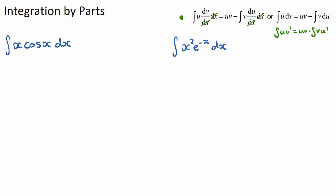We need to identify what u is and what v' is in our question. u needs to be something that is easily derivable, and v' needs to be easily integrable. This is important because on the right-hand side we need to integrate v·u', and ideally u' should be a constant so we can just integrate v with a constant attached. If u' is not a constant, we'll need another integration by parts.